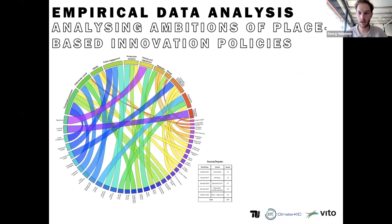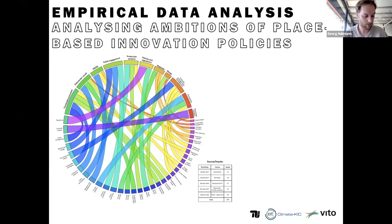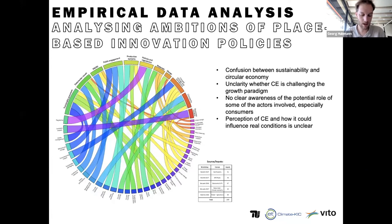On the other side, we are currently analyzing datasets from multi-stakeholder participatory processes embedded in circular economy transitions — between seven and ten datasets — to determine levels of ambition in selected cases and how they compare with the European perspective. Some findings partly reflect conceptual unclarities: within practitioners, there's confusion between sustainability and circular economy, unclarity about whether circular economy challenges the growth paradigm, and no clear evidence on the potential role of actors, especially consumers.